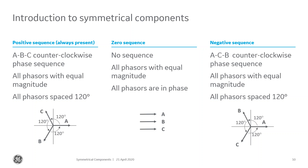The positive sequence network is what we expect to see with balanced power or load conditions. It looks just like what we expect on our phases in steady state — ABC rotation going counterclockwise, with all phasors of equal magnitude and equal 120-degree separation from each other. That is the positive sequence network.